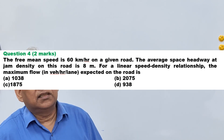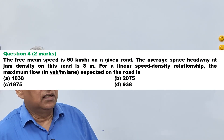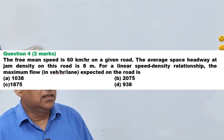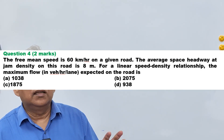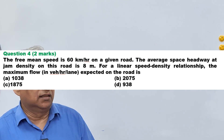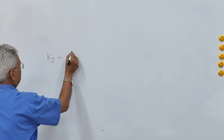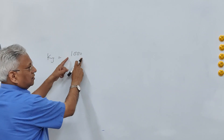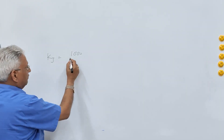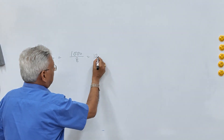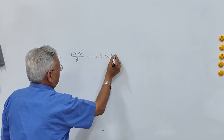Question 4: The free mean speed is 80 km/h on a given road. The average space headway at jam density is 8 meters. Therefore jam density KJ = 1000 meters per kilometer divided by space headway of 8 meters, which equals 125 vehicles per kilometer. Free flow speed Vf is given as 80 km/h.